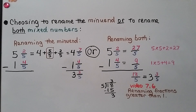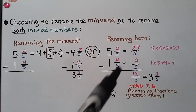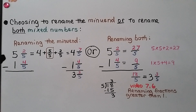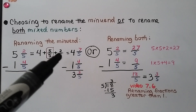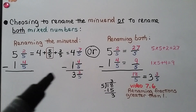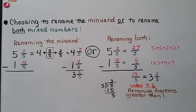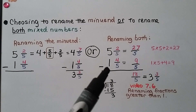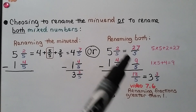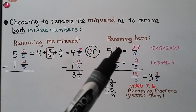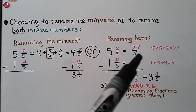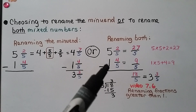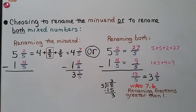When subtracting with mixed numbers, we can choose to rename just the minuend or rename both mixed numbers. Renaming the minuend: we change 5 and 2 fifths into a 4 and 5 fifths plus 2 fifths to become 4 and 7 fifths. Now we can take away 1 and 4 fifths and get 3 and 3 fifths. We can do the same problem by renaming both: we multiply 5 times 5 plus 2 to get 27 fifths, then 1 times 5 plus 4 to get 9 fifths. 27 fifths minus 9 fifths equals 18 fifths.